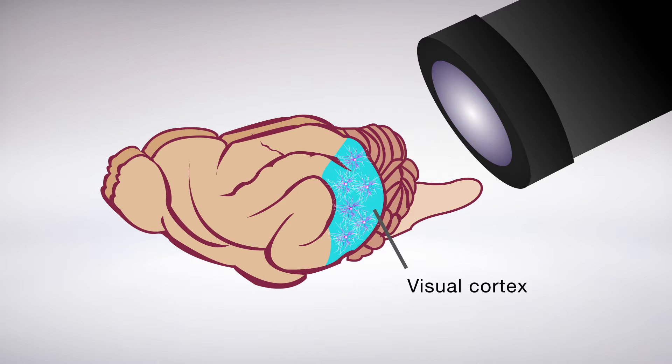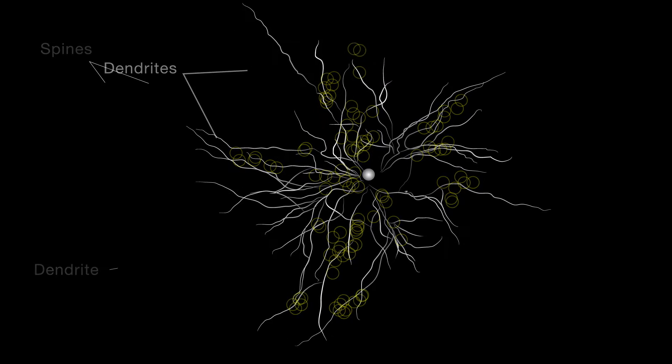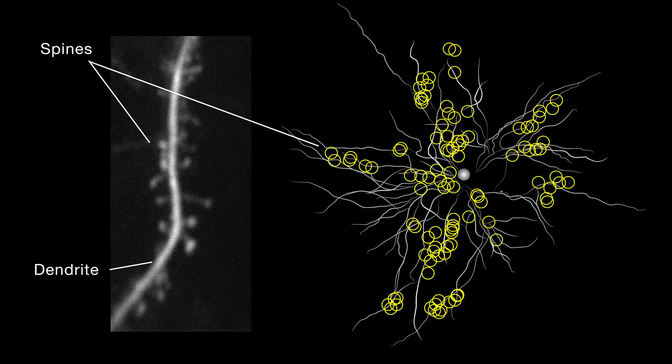Cortical neurons receive information from earlier in the visual pathway through tree-like extensions called dendrites. The dendrites are covered with tiny bumps called spines, where information is transferred between neurons.